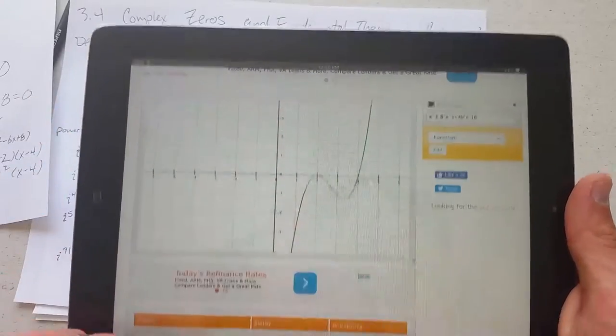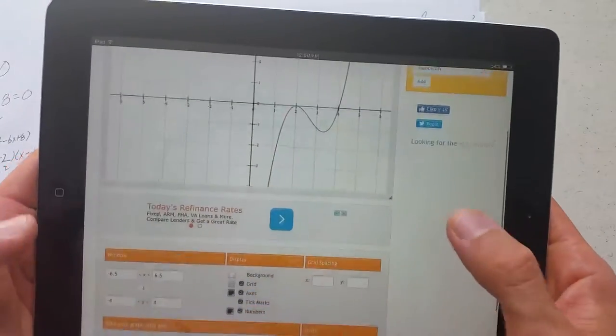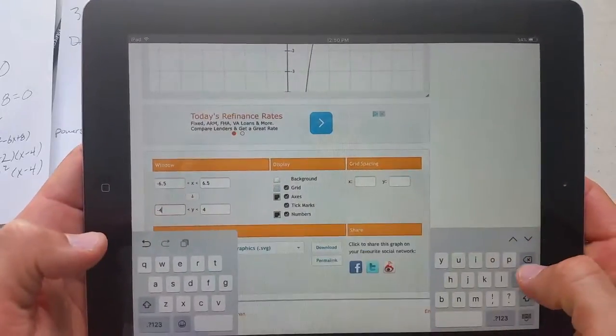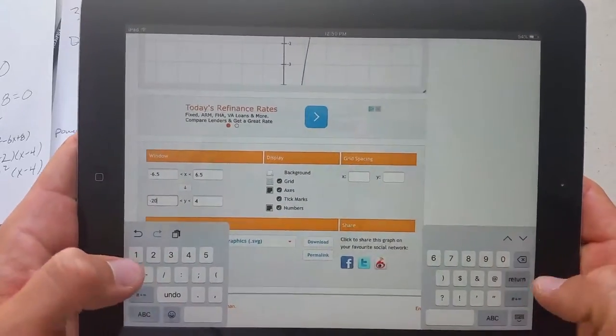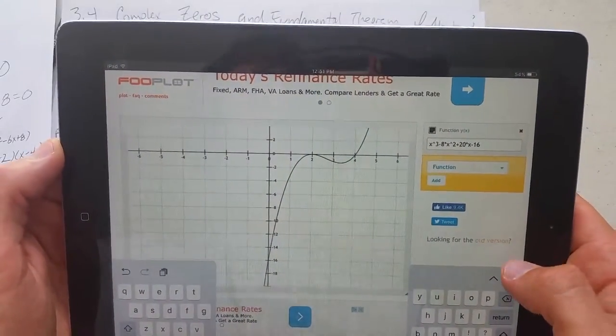There is a y-intercept negative 16 which would be somewhere way down here. And I guess I could go and mess around with the window. I'll go to negative 20 should cover me. There we go. It's a different view and you can see the y-intercept.